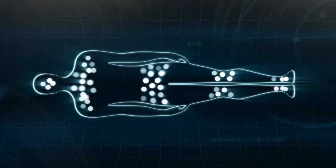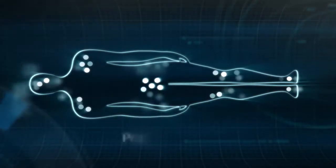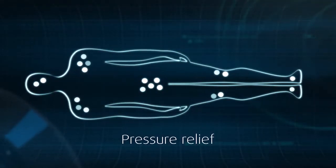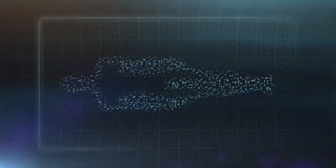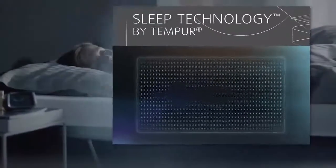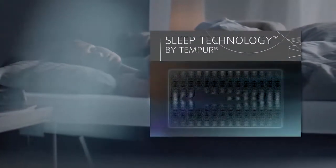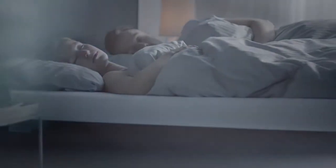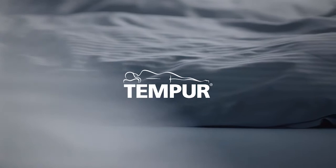This is what a pressure map of a TEMPUR mattress shows. Pressure relief. Contact with the mattress is so gentle and light, you're hardly aware of the mattress at all, which means you're more likely to enjoy a restful and restorative night's sleep without the tossing and turning. TEMPUR. All you feel is weightless.